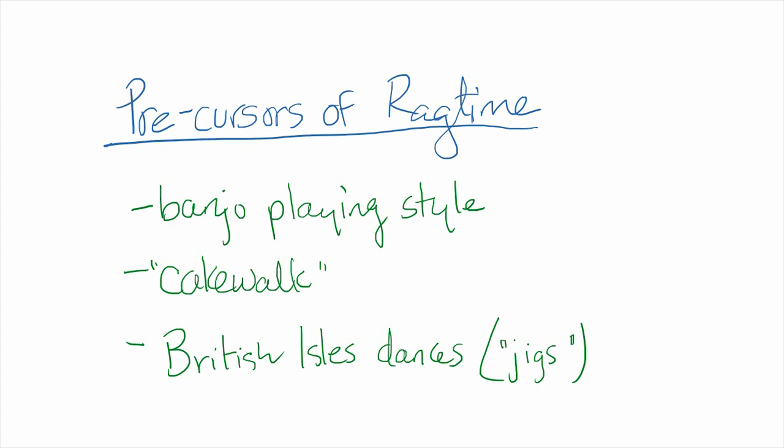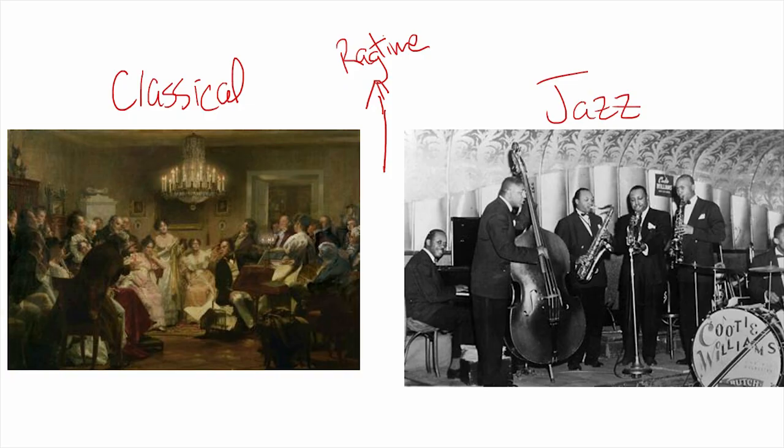Since music is an ever-evolving beast with one genre leading into the next, what forms inspired the creation of ragtime? Banjo playing was popular in the Americas, and a lot of people started playing the piano like they would play the banjo — and that style influenced ragtime. There were also syncopated styles like the famous cakewalk dance, which was considered a precursor to ragtime, and fiddle music and dances from the British Isles — jigs and fast dances. Ragtime was also mainly distributed via sheet music before recorded music became available, and its sound was evolving away from the classical sound toward what would become jazz.